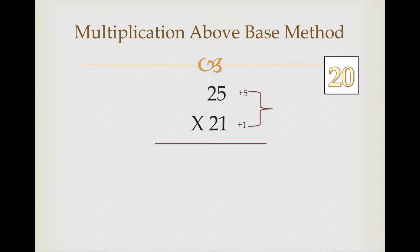Multiply these two digits: 5 ones are 5. Write down 5. We write 5 because in base 20 there is only one zero, so 5 is a single digit and can be written directly.